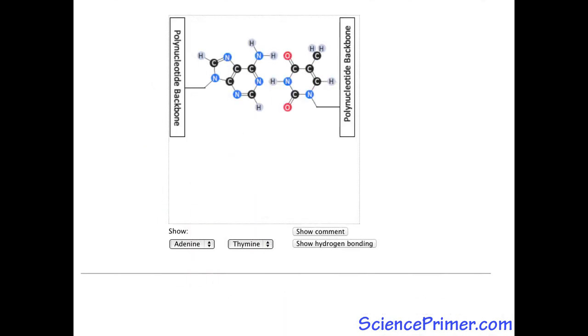The formation of stable hydrogen bonds depends upon the distance between two strands, the size of the bases, and the geometry of each base.